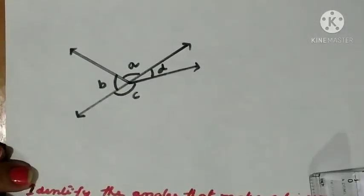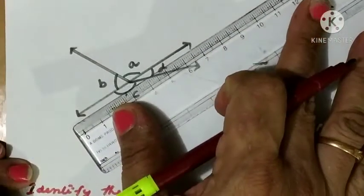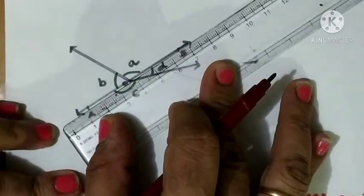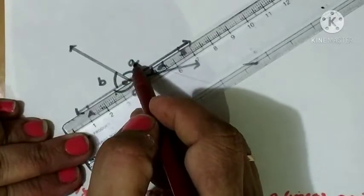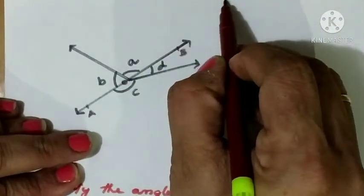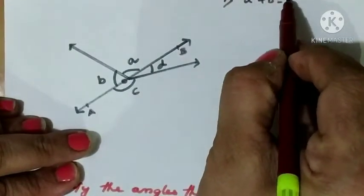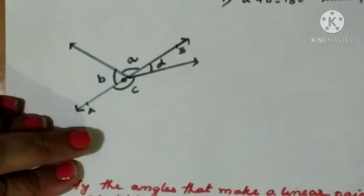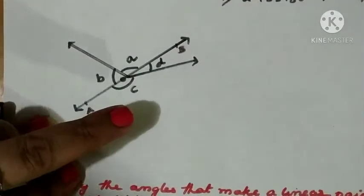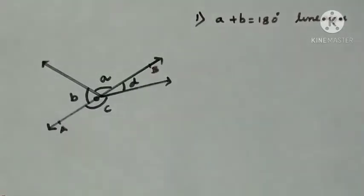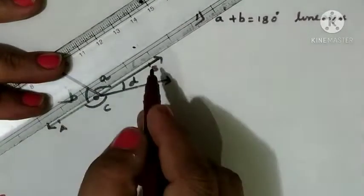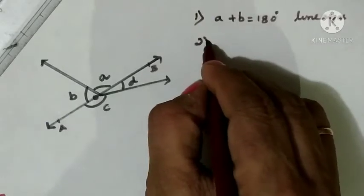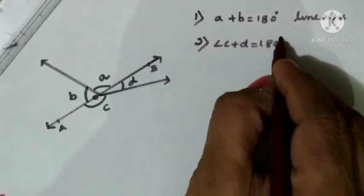Now, from this diagram, identify the linear pairs. Keeping the scale along line AB with center point O, we can see two adjacent angles a and b on line AB. So the first linear pair is angle a and angle b: a plus b equals 180 degrees. The second linear pair is angle c plus angle d, which also equals 180 degrees, since OB and OA are non-common arms forming opposite rays.